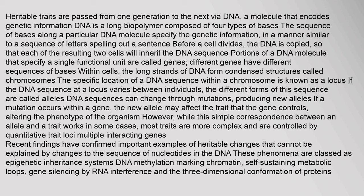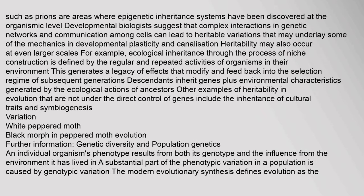Recent findings have confirmed important examples of heritable changes that cannot be explained by changes to the sequence of nucleotides in the DNA. These phenomena are classed as epigenetic inheritance systems: DNA methylation marking chromatin, self-sustaining metabolic loops, gene silencing by RNA interference, and the three-dimensional conformation of proteins such as prions are areas where epigenetic inheritance systems have been discovered. Developmental biologists suggest that complex interactions in genetic networks and communication among cells can lead to heritable variations that may underlie mechanics in developmental plasticity and canalization.